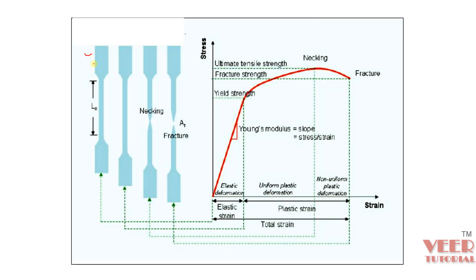When we apply a tensile load onto the specimen, we consider only the gauge length as the area of concern. As we pull the specimen and the other end is fixed, after some time it is stretched and the length increases. If we continue pulling, necking starts to take place — meaning the cross-sectional area starts to decrease. Eventually the part fails, which is the fracture point.